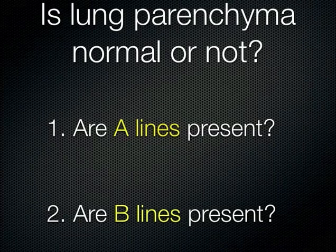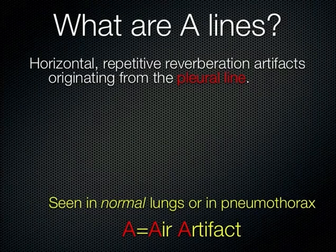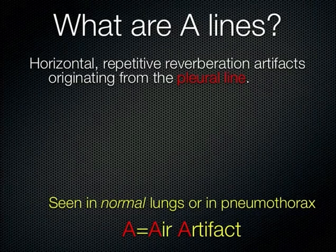A-lines are horizontal, repetitive artifacts from reverberation due to ultrasound waves trapped at the pleural line. Anytime you have two substances next to each other with very different acoustic impedance — like the pleural line and air right next to it — that sets up a reverberation. The probe reads the delayed return as a deeper structure. You can see A-lines in normal lungs or in pneumothorax, because A-lines just mean air — it doesn't tell you where the air is.